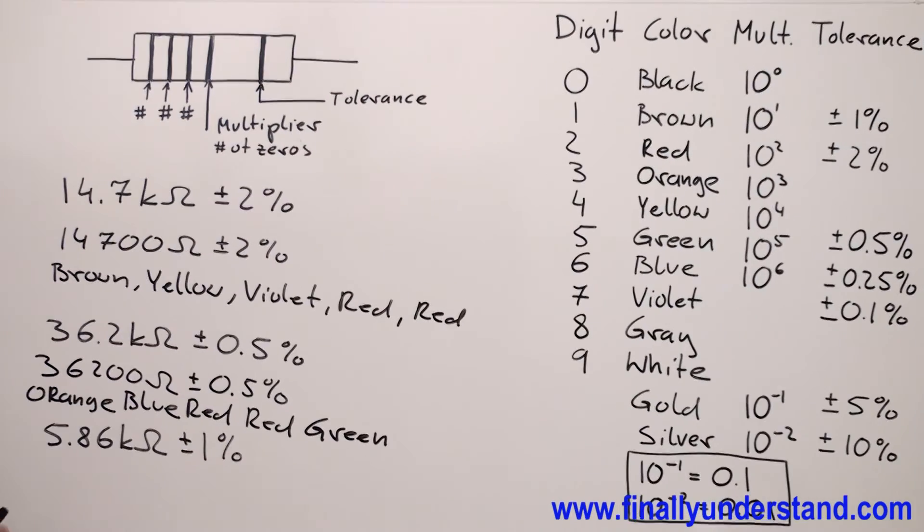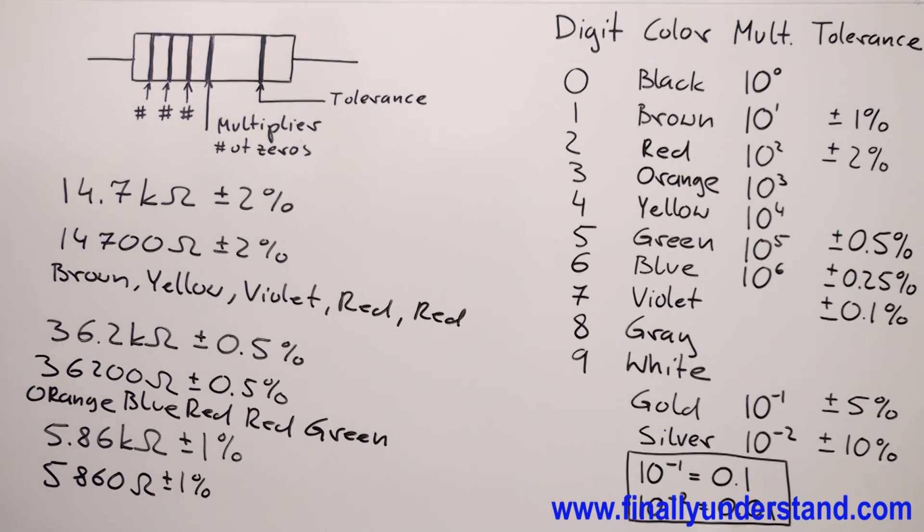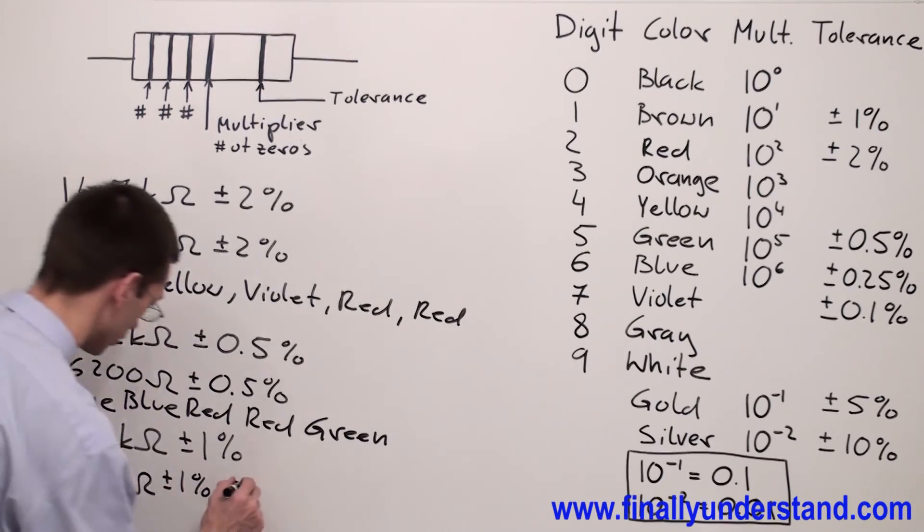Let's take a look at this one. I have 5.86 kilo ohms. This is 5860 ohms plus minus 1%.